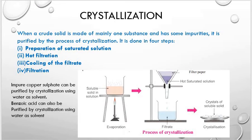Crystallization: when a crude solid is made mainly of one substance with some impurities, it is purified by the process of crystallization. It is done in four steps: (1) preparation of a saturated solution, (2) hot filtration, (3) cooling the filtrate, and (4) filtration.